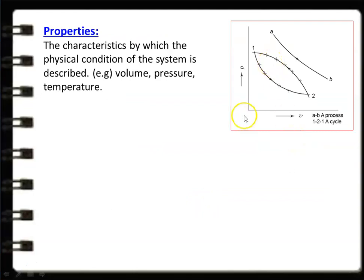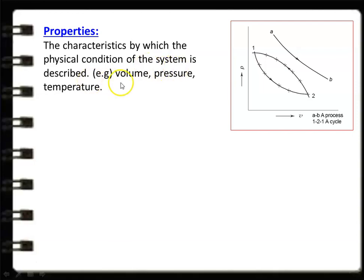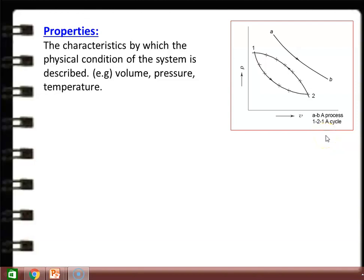Looking at the P-V diagram: the x-axis represents volume and the y-axis represents pressure. We have points 1, 2, A, and B. At point 1, pressure is P1 and volume is V1; at point 2, pressure is P2 and volume is V2. The characteristics of a system are defined by its properties. Properties are the characteristics by which the physical condition of the system is described — for example, volume, pressure, and temperature are the basic thermodynamic properties.